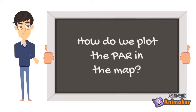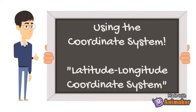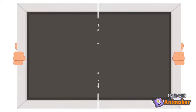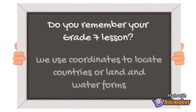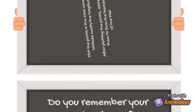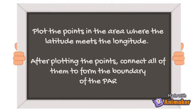Now this gives us a question: how do we plot the PAR on the map? That's right, using the coordinate system, also known as the latitude-longitude coordinate system. Do you remember your grade 7 lesson? We use coordinates to locate continents and land and water forms. Plot the points in the area where the latitude and longitude intersect. After plotting the points, connect all of them to form the boundary of the PAR.